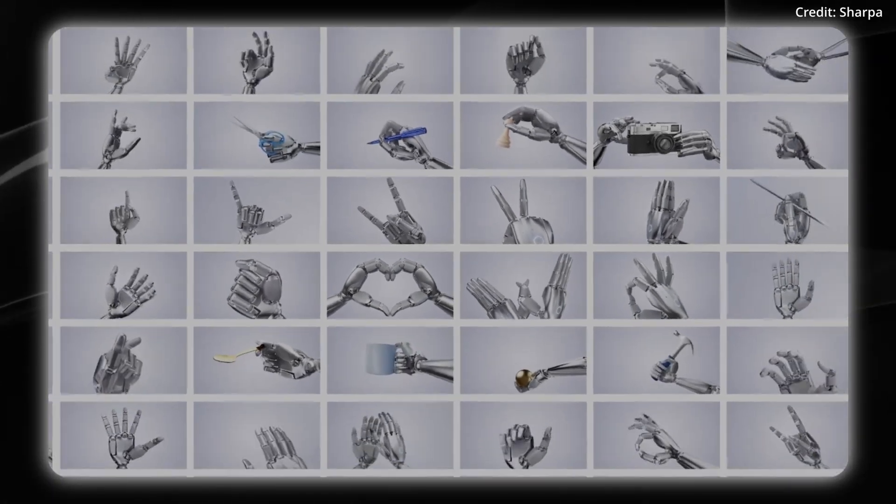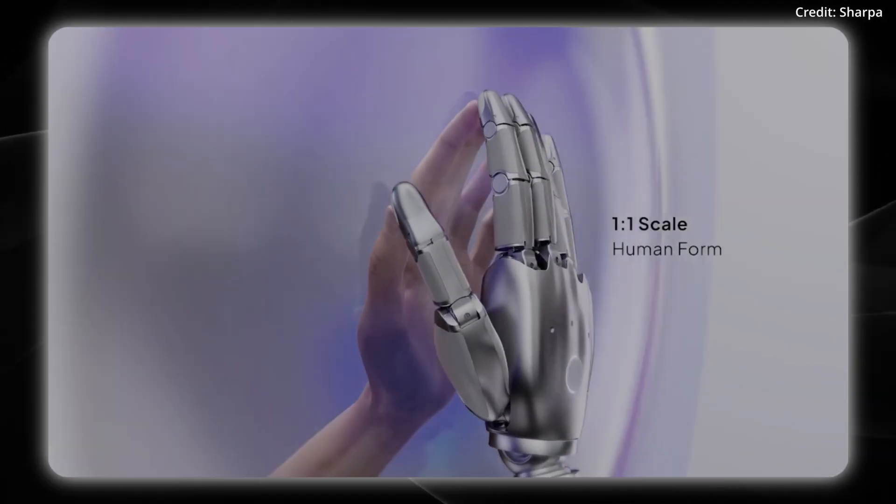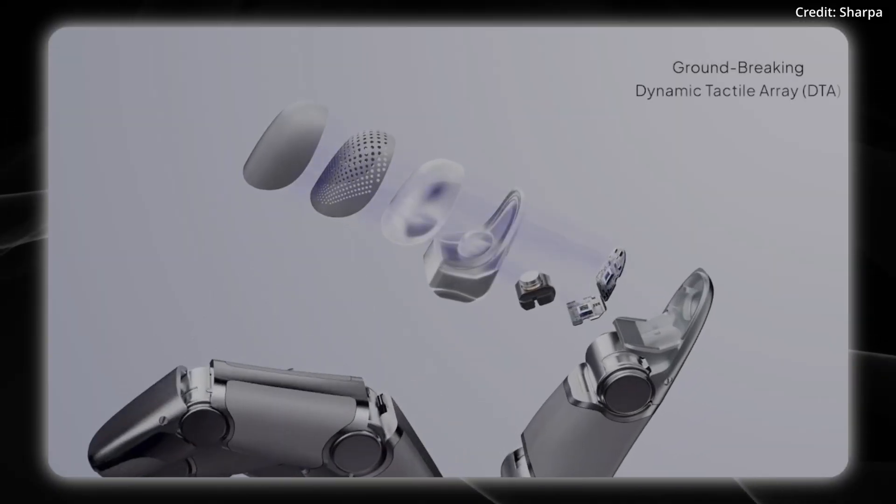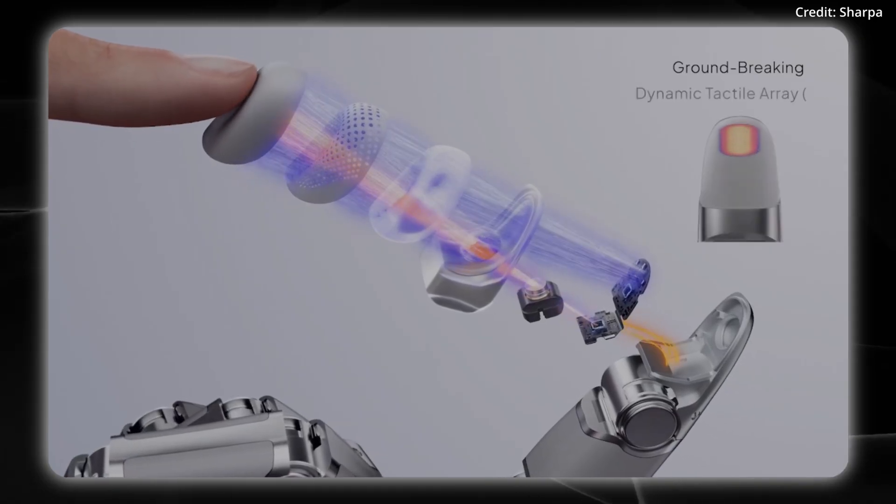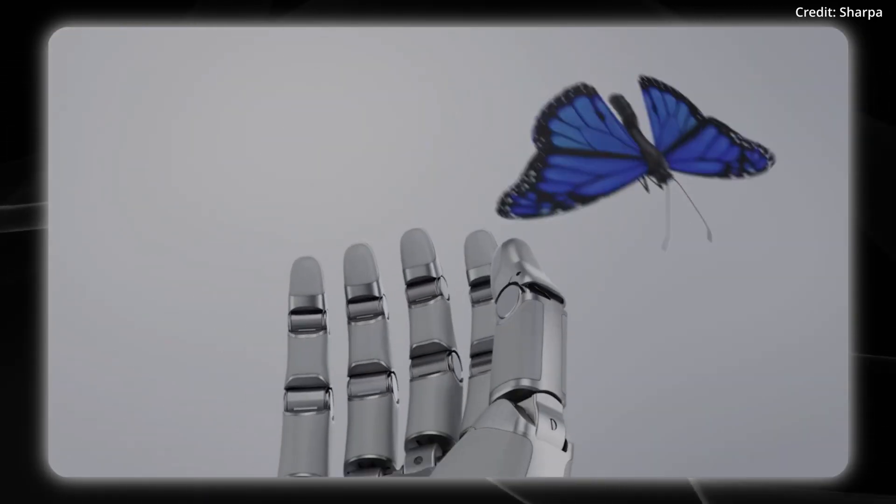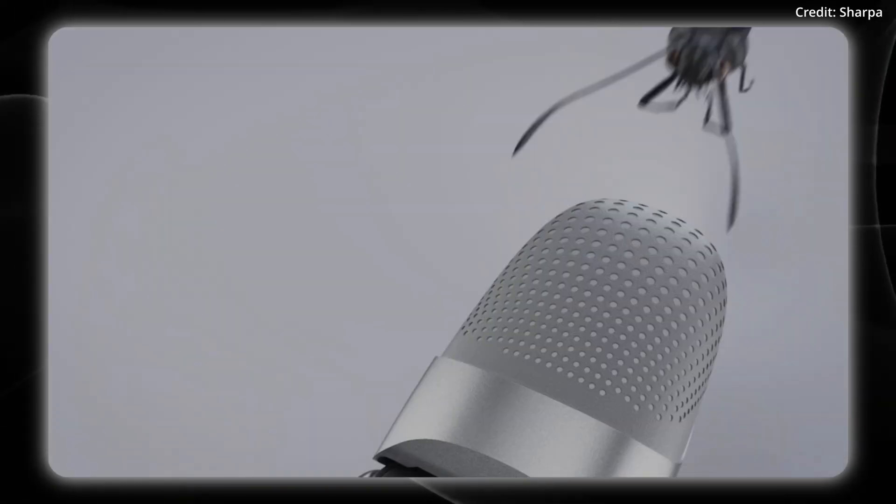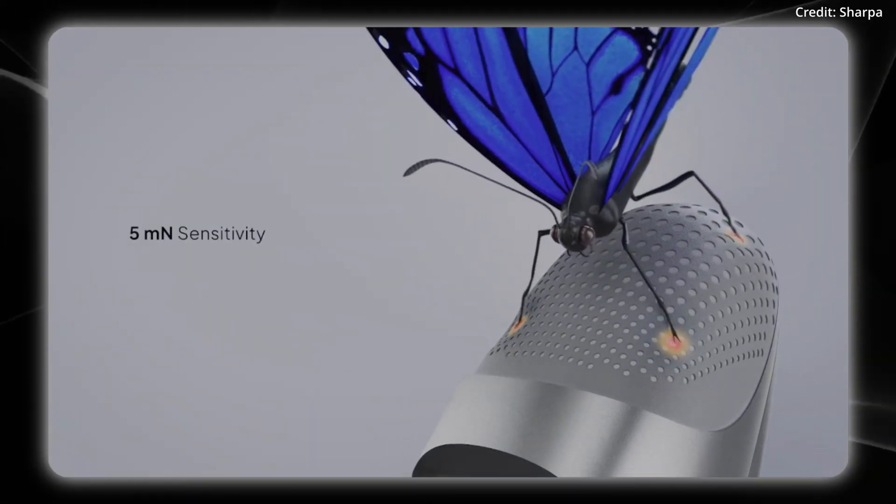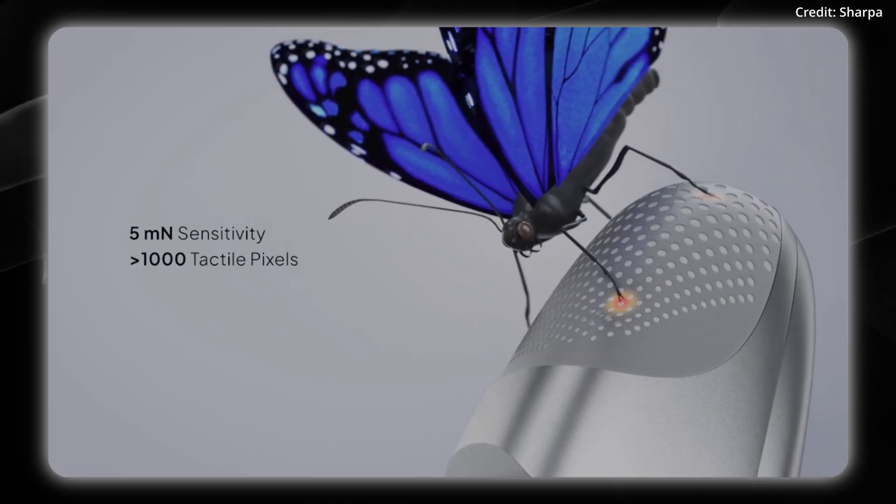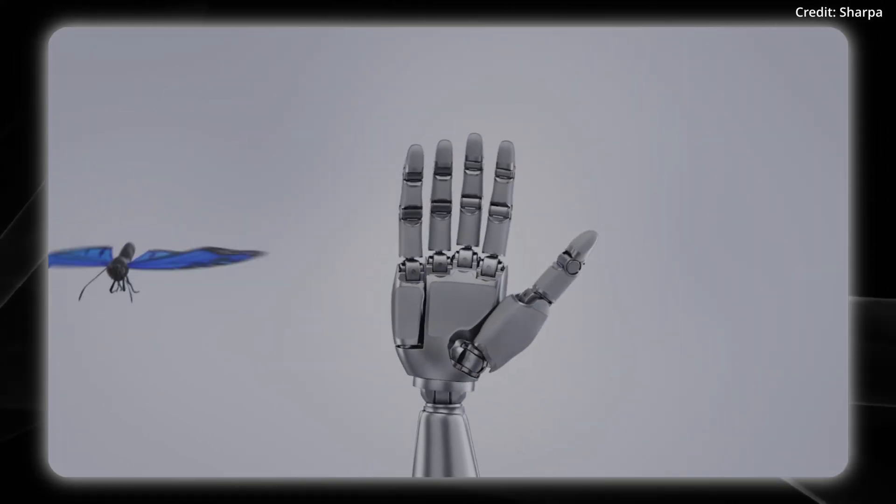Apparently they use a proprietary neural network of a bunch of different modules for their tactile feedback system. And the hand has over 6,000 discrete levels of pressure detection throughout. And it can sense forces between 0 to 30 newtons per fingertip and ultra-fine resolution down to 0.005 newtons of sensitivity. And the system uses over 1,000 tactile pixels per fingertip.